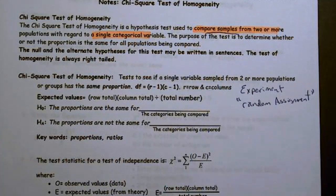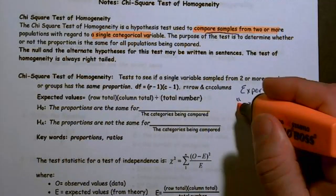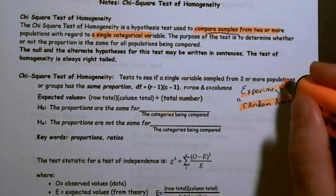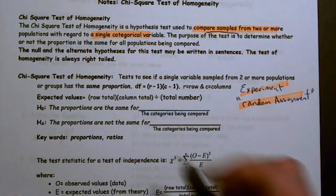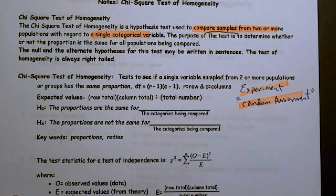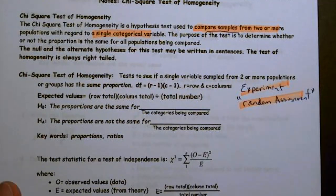If we are running an experiment where they use the phrase random assignment, and you're not sure if it's independence or homogeneity - if they use the word experiment or random assignment, then this will be almost guaranteed to be a chi-squared test of homogeneity.